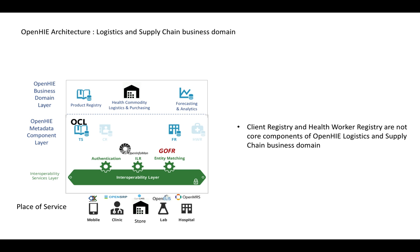The next business domain we're going to look at is logistics and supply chain. In the business domain layer, we may have several components such as a product registry, health commodity logistics and purchasing system, and forecasting and analysis tools. OpenLMIS is a potential software tool to serve as the health commodity logistics and purchasing tool, and there are a number of tools used globally for the product registry and forecasting and analytics that OpenLMIS will need to interface with. The key business domain needs include commodity purchasing, commodity distribution, and related supply chain functions.